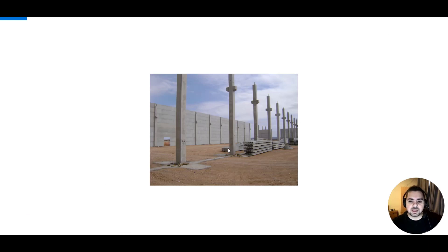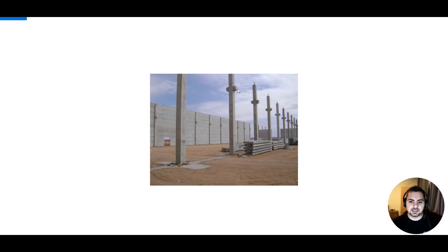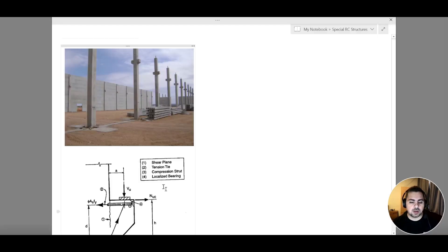Looking at this image, we can see precast concrete structures which are my holocore slabs. These holocore slabs are going to be placed on precast beams, and these precast beams are going to be supported on my corbels or brackets. These things coming out of my columns are my corbel — we can take it as a short cantilever coming out of my column.